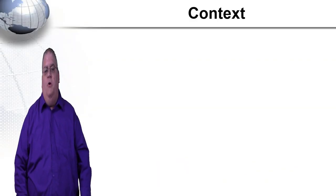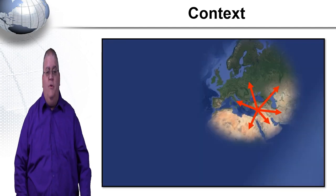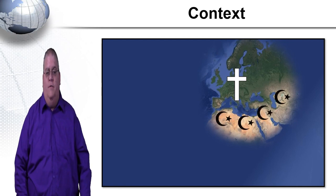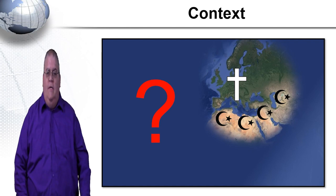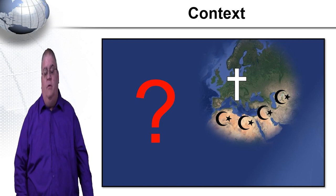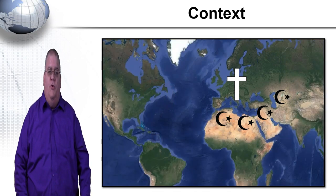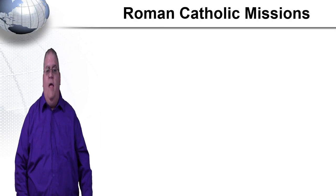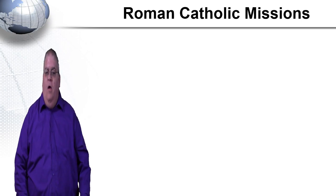We'll start with the big picture context. Christianity had spread in every direction after Christ and succeeded in evangelizing all of Europe. Evangelism to the south and east was cut off by the Muslim conquests, and to the west was endless ocean as far as they knew. So there was little missionary activity in medieval Europe because there was little reasonable possibility for it. But when trade and discovery introduced Europe to the rest of the world, missionary activity started again in earnest. In the first history course, we covered the early Roman Catholic missions in the age of exploration, so I'll just briefly review it here.